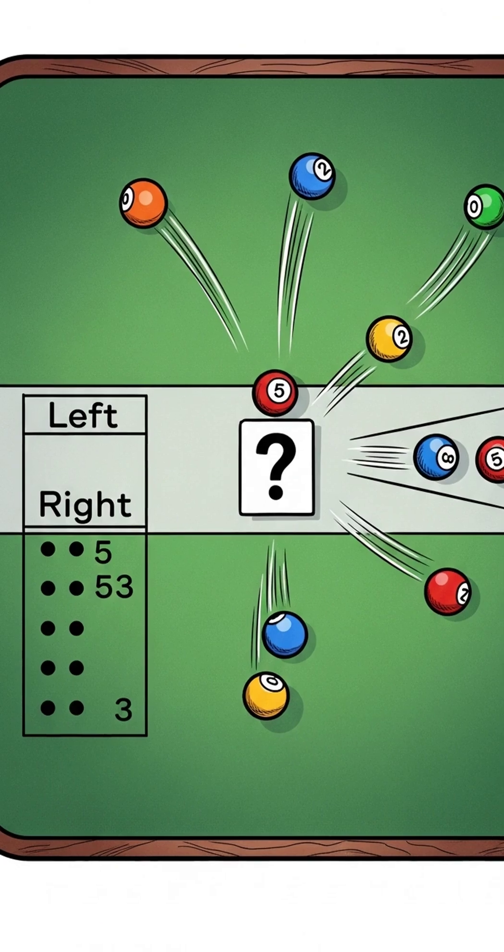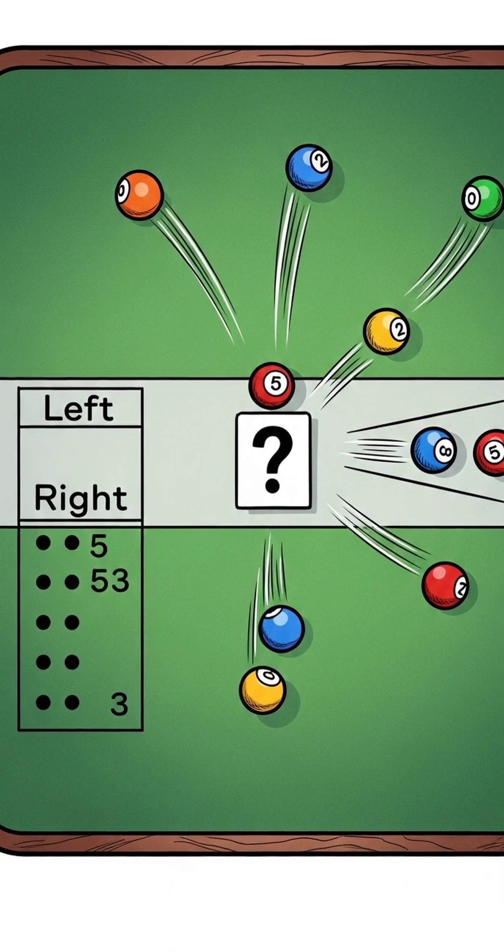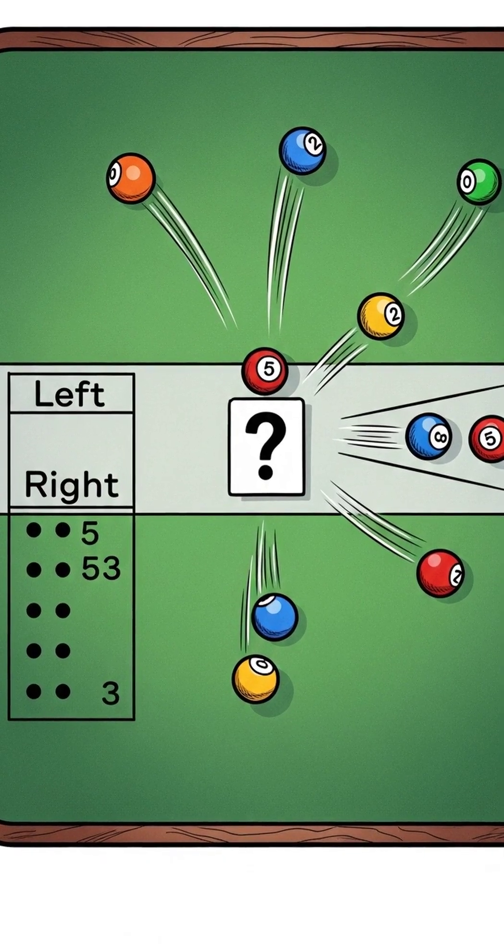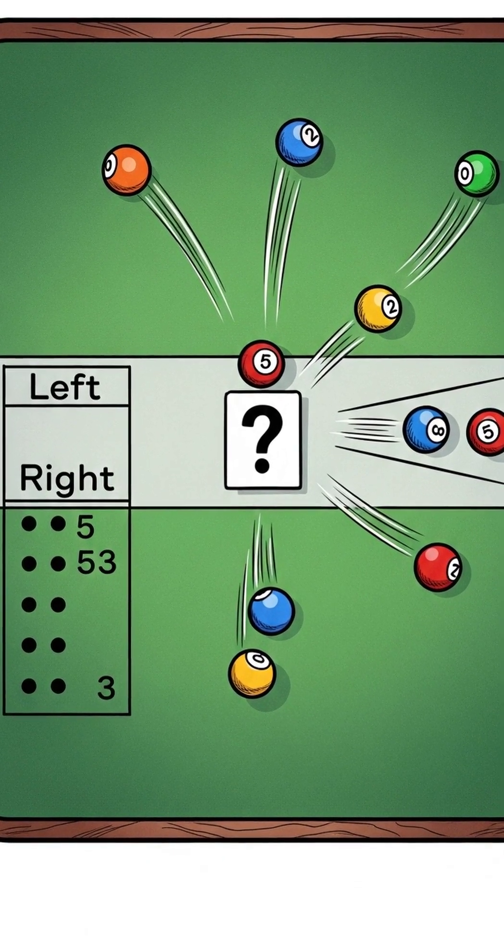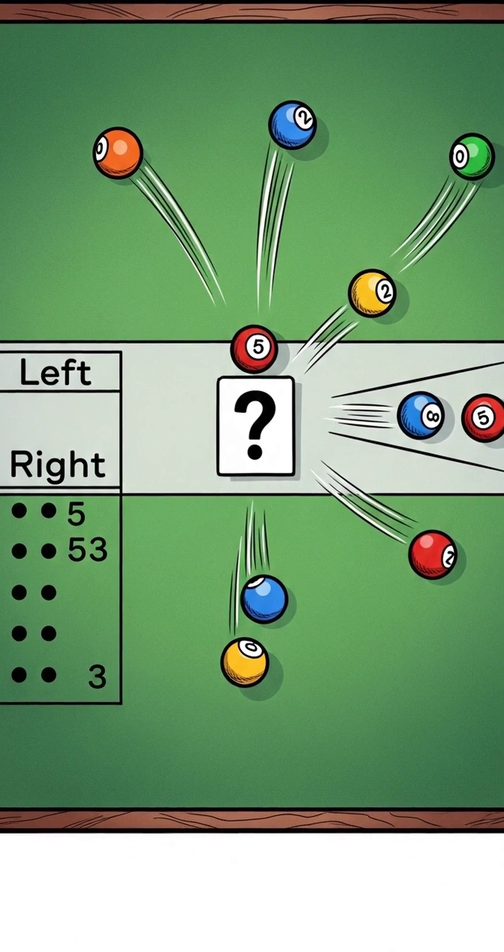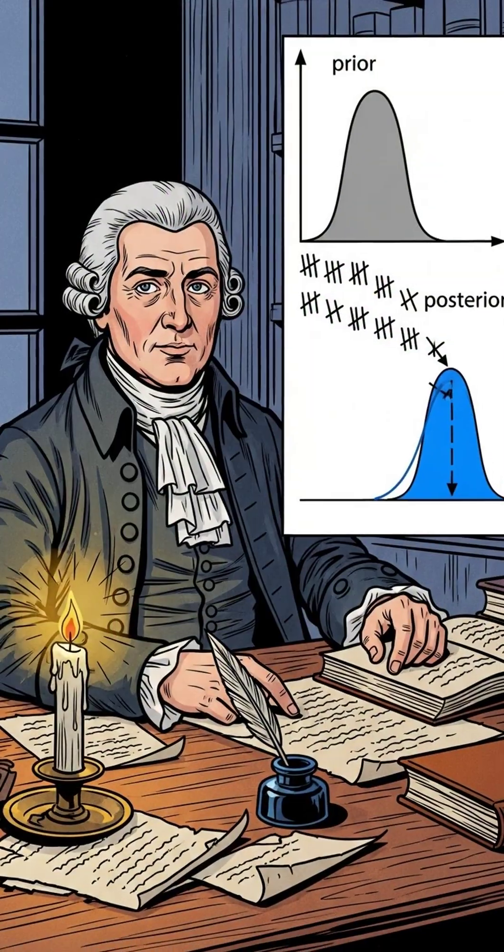Picture this. You toss a ball onto a square table. You don't look at where it lands. Now you throw more balls and only record whether each one lands to the left or the right of that first hidden spot. From those left-right results, you slowly learn where the first ball probably is.